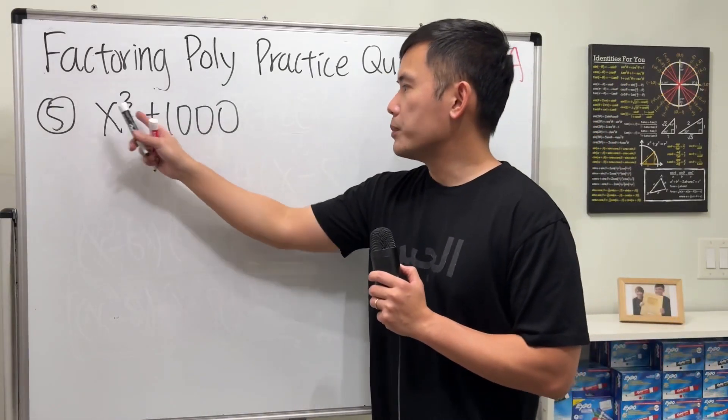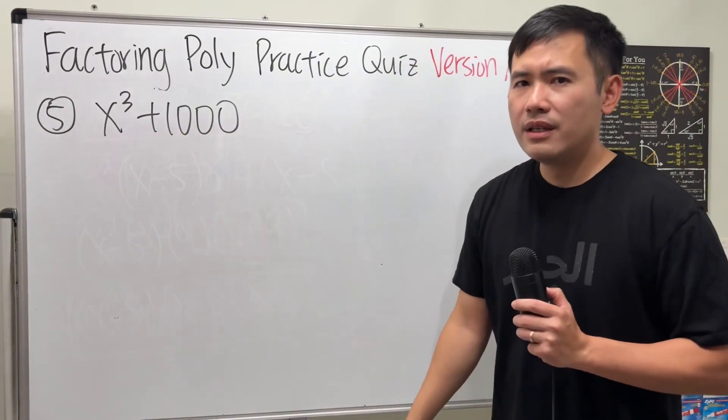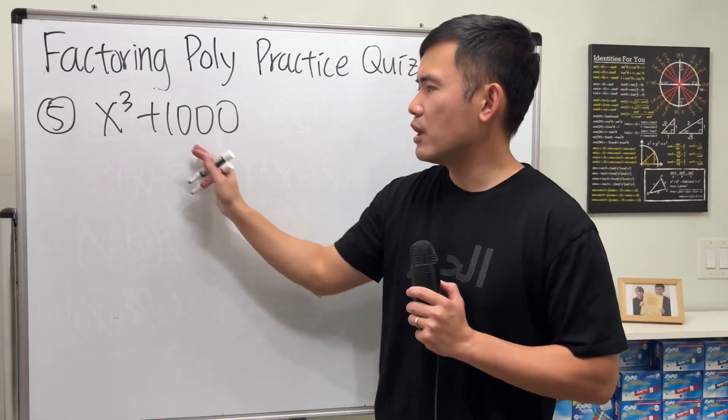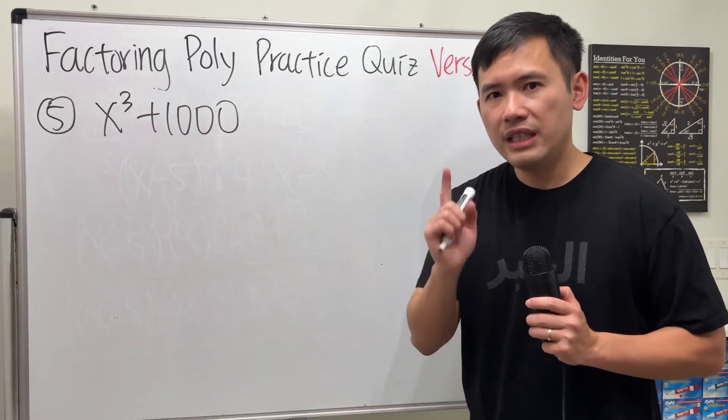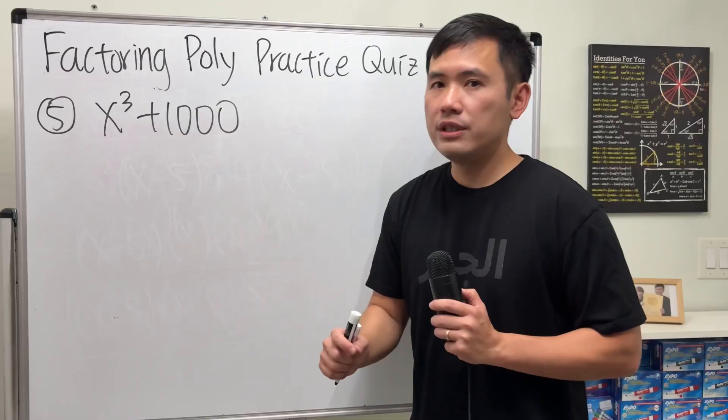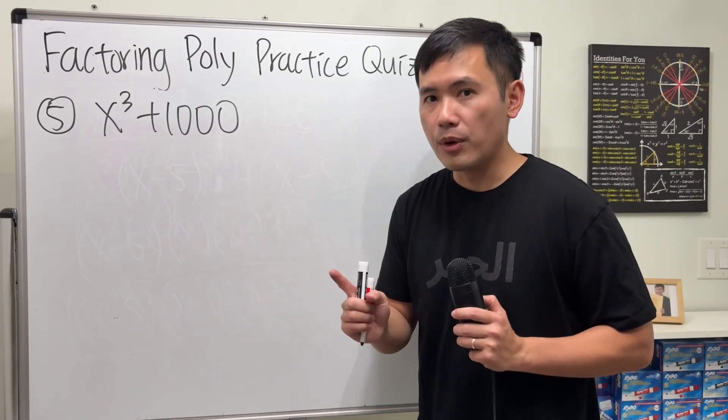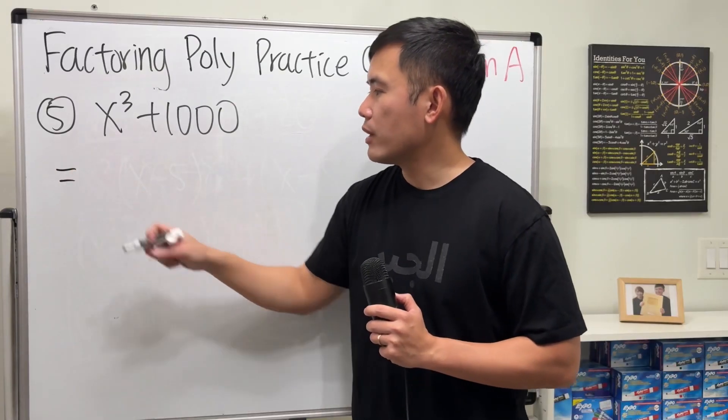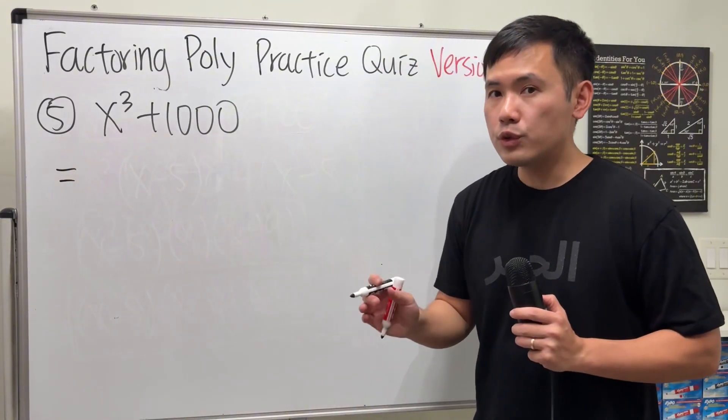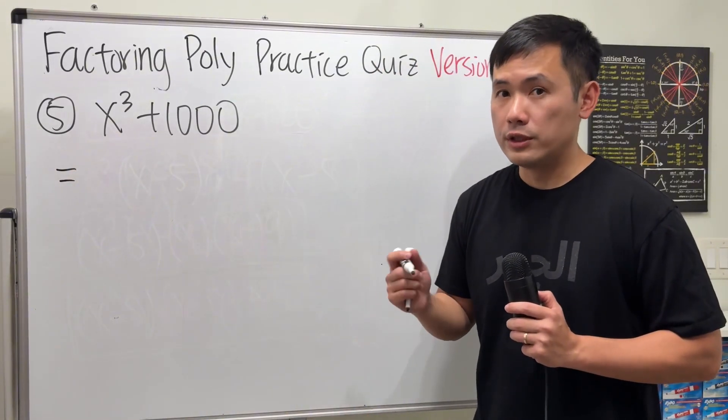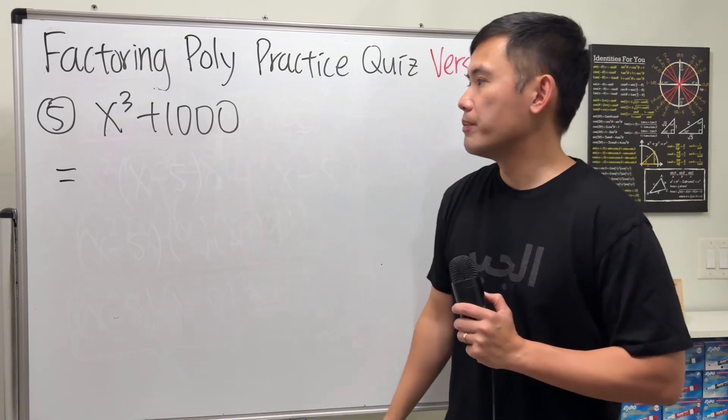Now the last one, we have x cubed plus 1000. Hey, this is a sum and then we have two terms. Can we factor it? Yes, because this right here is actually a sum of two cubes and that is actually factorable. We have seen that from the previous question that sum of two squares is not factorable with real numbers, but this is possible. Let me show you.